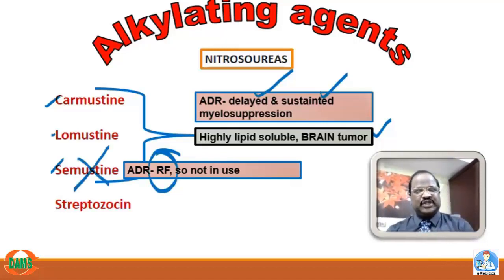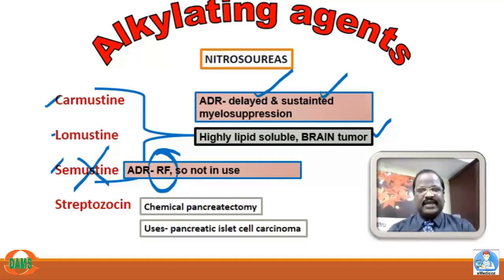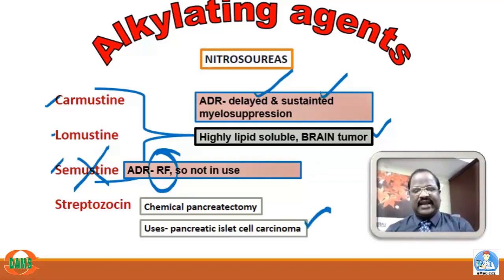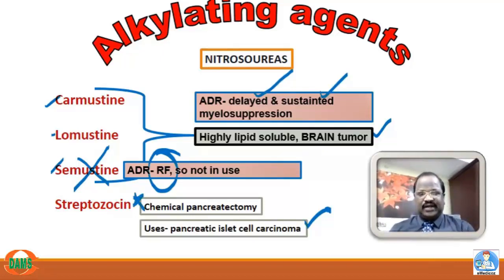Semustine causes severe renal failure, so it is not used clinically. Streptozocin is called a chemical pancreatectomy agent and is useful for treatment of pancreatic islet cell carcinoma. That finishes the important MCQs on the nitrosourea group of alkylating agents.